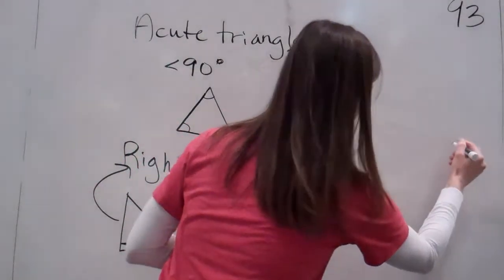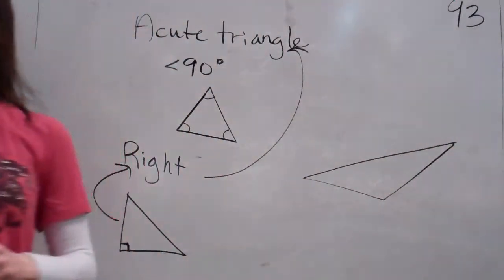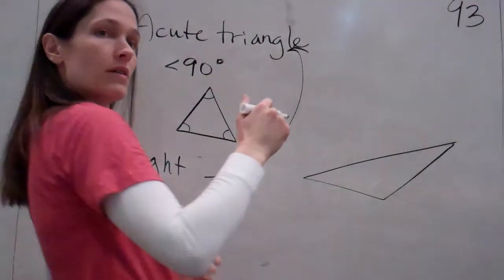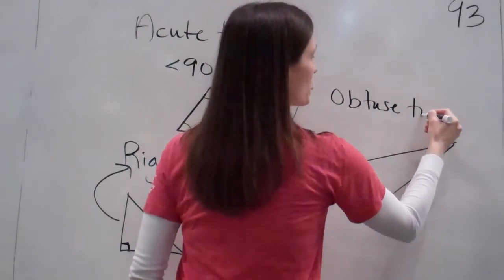And then the last one. Oh, dear. Ready? There we go. You may know what that one's called. Yes, Jaden? This is the obtuse triangle. Okay. What do you notice about the obtuse triangle?